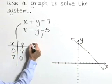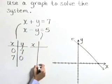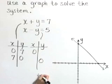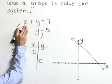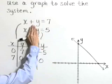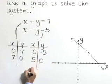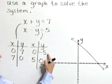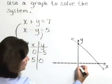Now let's graph our second line using the same approach. A T-table and intercepts. In this equation, if X is zero, then Y is negative five. If Y is zero, then X is positive five.